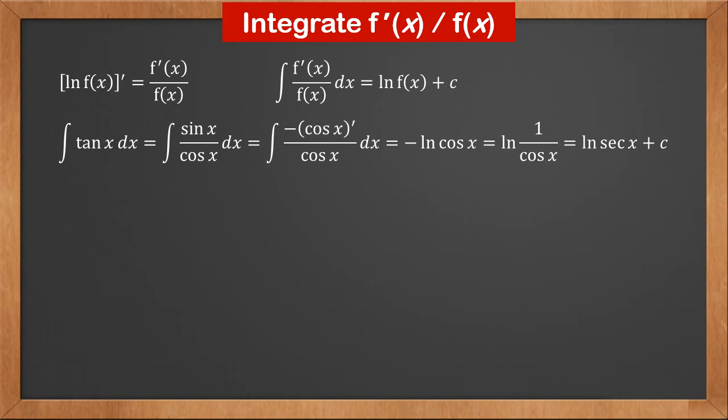We can use this to integrate tangent and cotangent x. Tangent x is sine x over cosine x. The derivative of cosine x is minus sine x, so the integral is minus cosine x dash over cosine x. Therefore, the integral is minus ln cosine x.